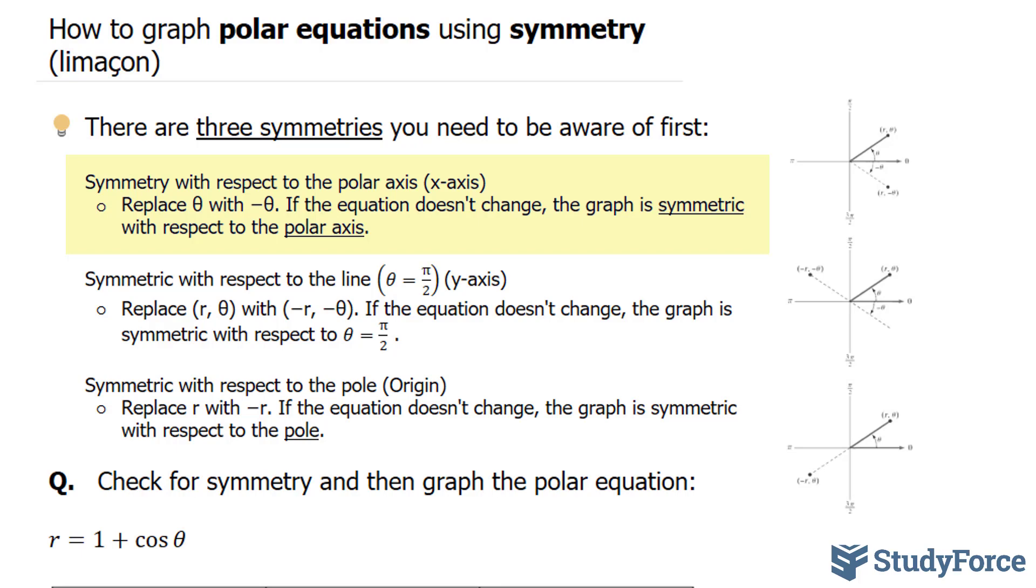To find out if it's symmetrical about the polar axis, you replace theta with negative theta, and if the equation doesn't change, the graph is symmetrical about the polar axis.